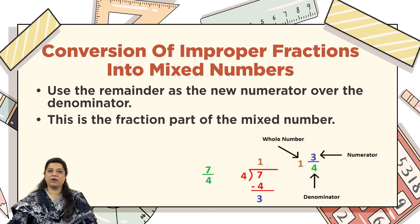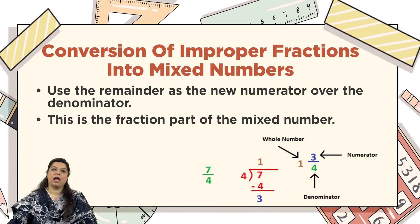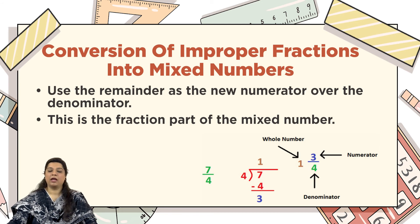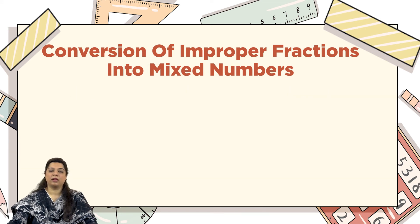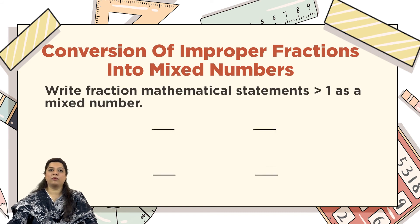Let's go through this one more time: 7 divided by 4. 4 goes into 7 once with remainder 3. The quotient 1 is your whole number part, the remainder 3 becomes your numerator, and the divisor 4 remains your denominator. Hence our mixed number result is 1 whole number 3 upon 4.